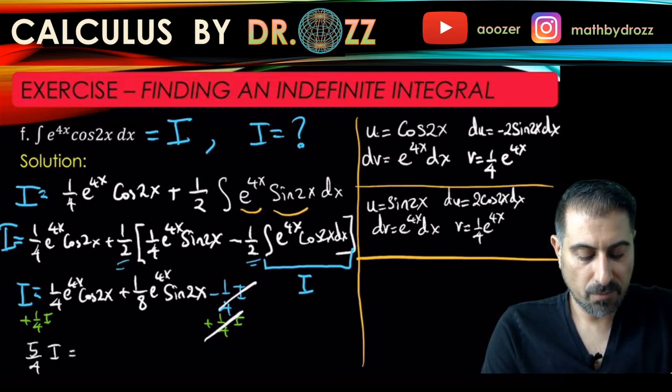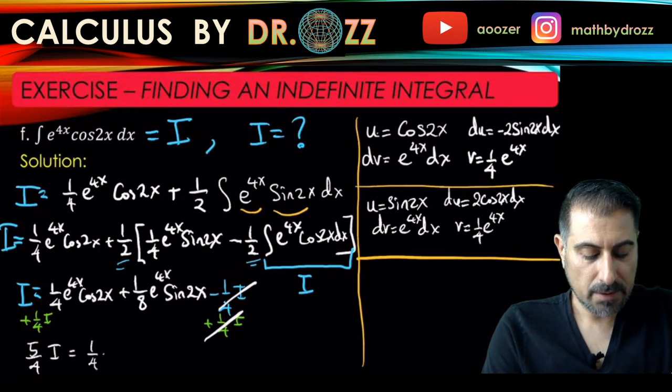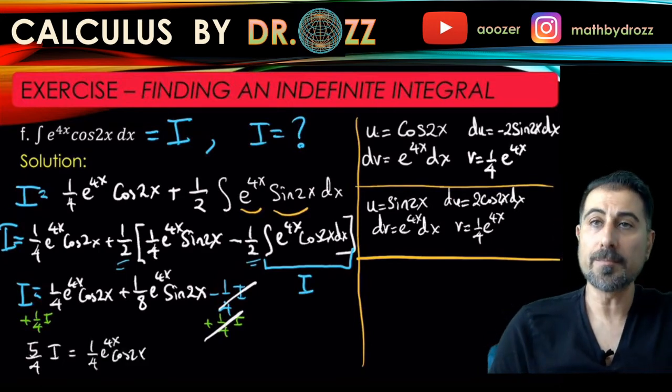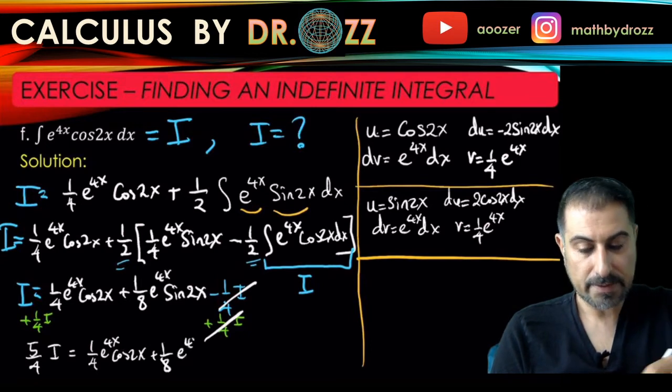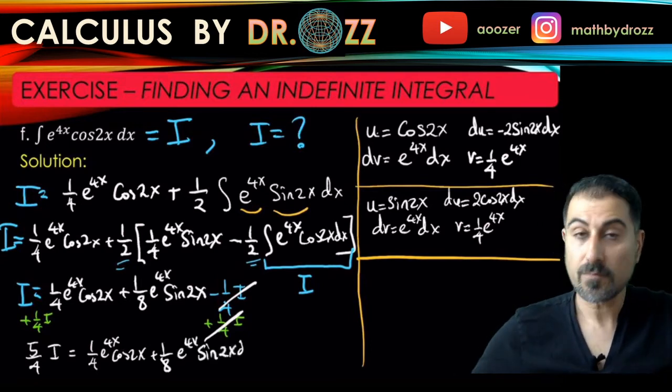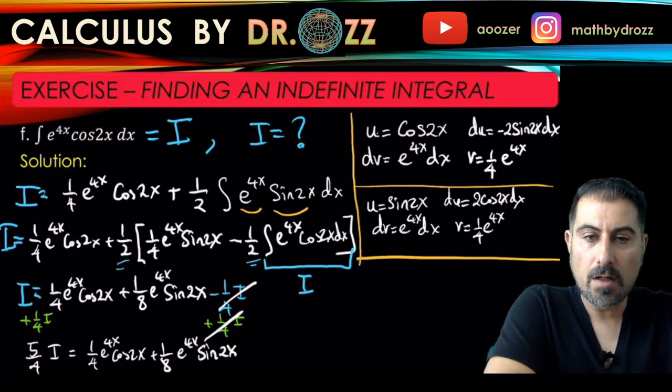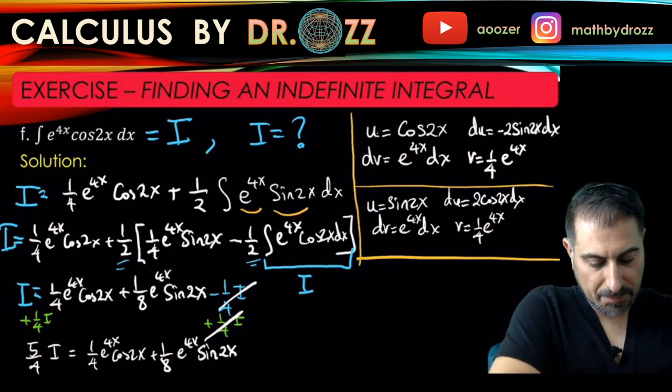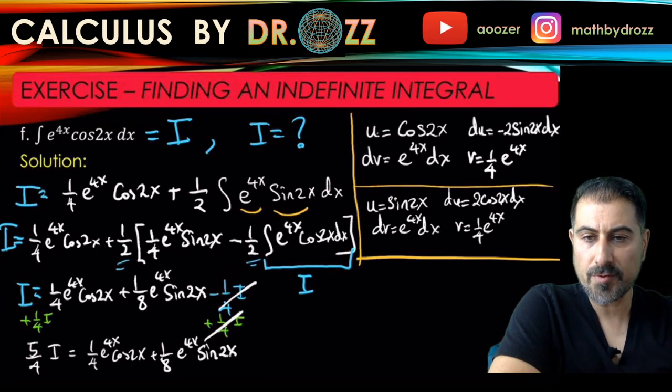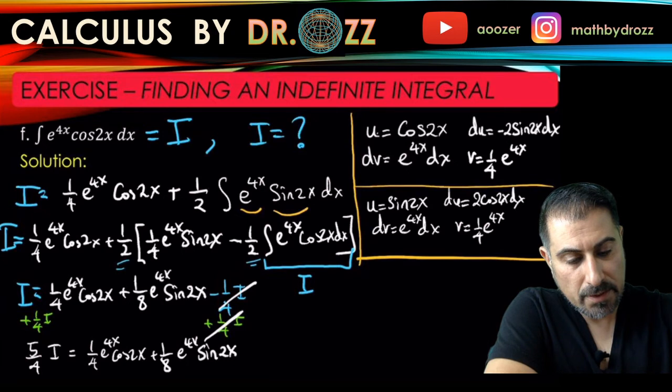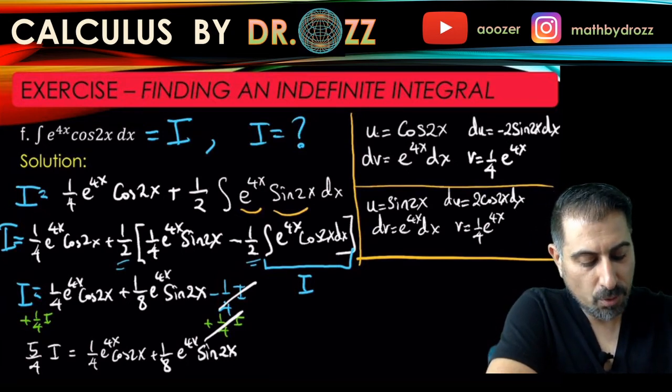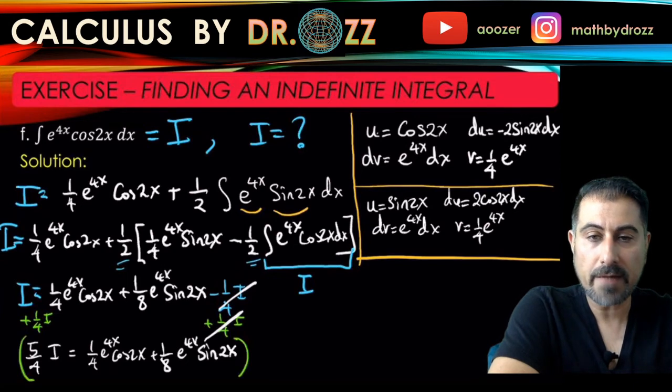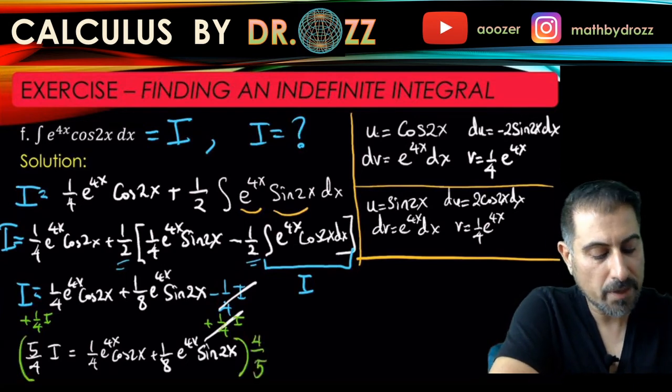I need some space, so I just cleaned up some part here. Five-quarters of I is that expression. I need one I, so what I'm going to do here is multiply both sides by four over five so that I will have a good expression for I. Let me just write it here. I is equal to four-fifths times one-fourth, which is one-fifth e to the 4x cosine 2x.